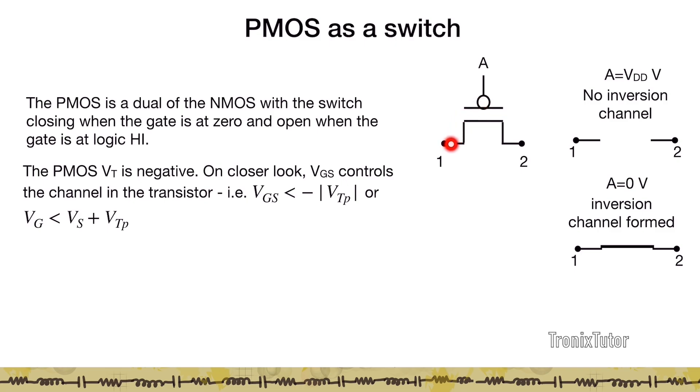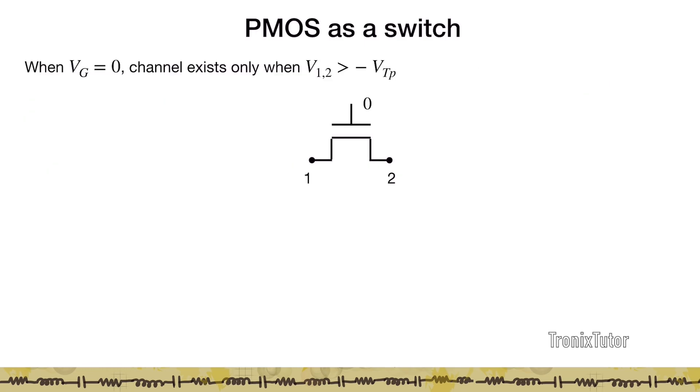And if you look at this again, you want this VGS to be less than minus modulus of VTP or you want VGS to be less than VTP. Remember, VTP is a negative quantity, which means that you want VG to be less than VS plus VTP or you want this node to be a VTP away from the source node for the conduction through the transistor to happen. Which means that when this node goes to zero, that is when I've shorted this PMOS transistor, that will happen only when one or two go to minus VTP because I need the gate to be a VTP higher than the source. Let's look at the flip version.